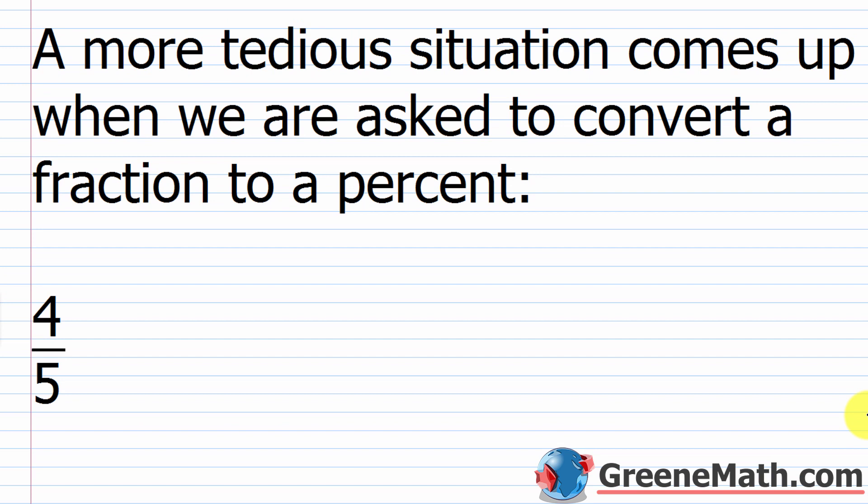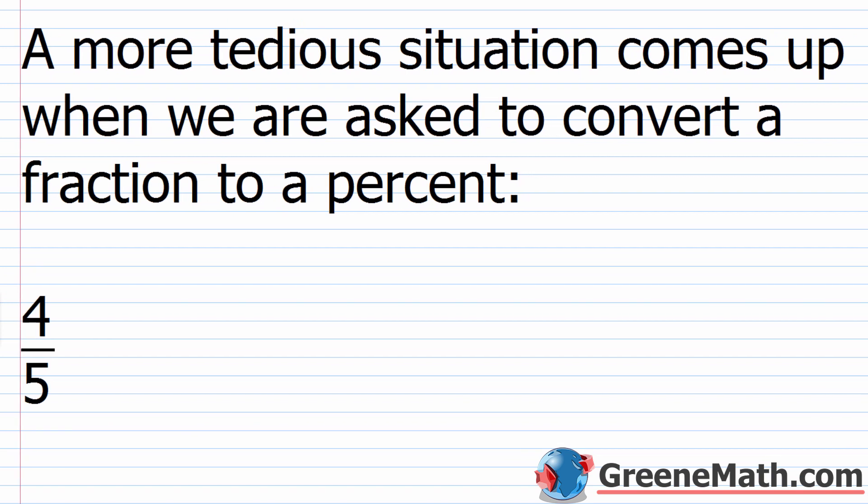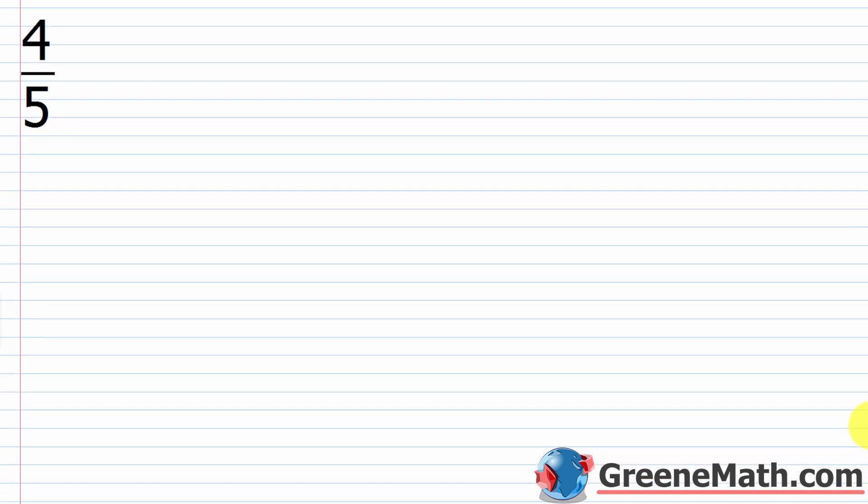Now let's talk about converting a fraction to a percent — a more tedious scenario. There are two ways to think about doing this. For something like four-fifths, you could divide the numerator by the denominator to get a decimal, then convert that decimal into a percentage. The faster way would be to transform the fraction into an equivalent fraction with 100 as its denominator — but you'll see that's not always simple. So for four-fifths, let's do it both ways.